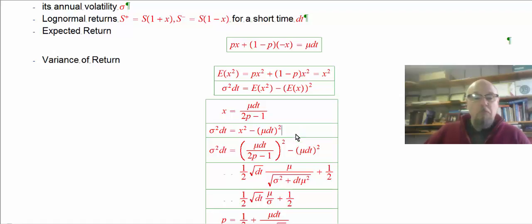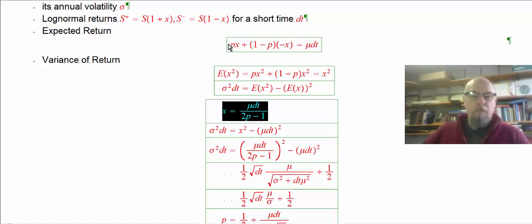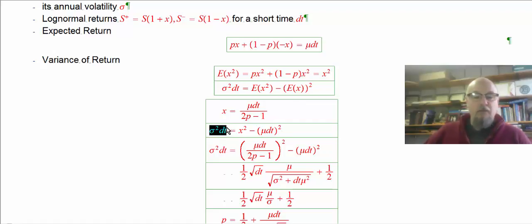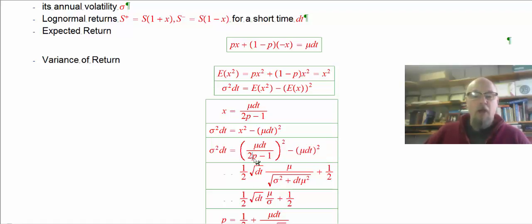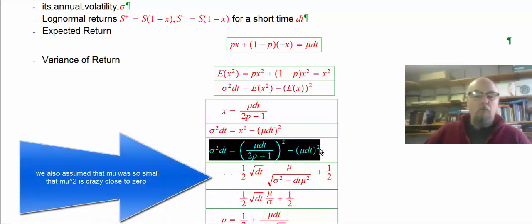In this equation, the only unknown is x, since we've solved the expected return equation for x as a function of p. Substituting that x into the variance equation gives us one equation where the only unknown is p. The dt is chosen, sigma and mu come from the data, and all we need to do is solve for p.